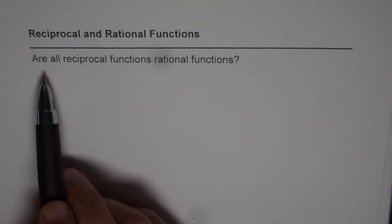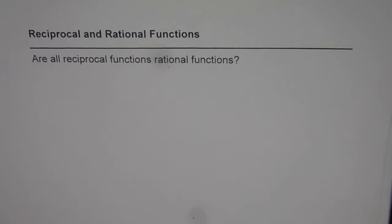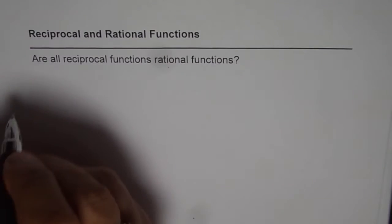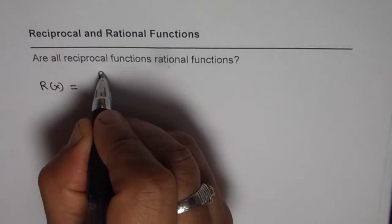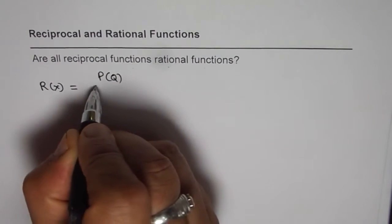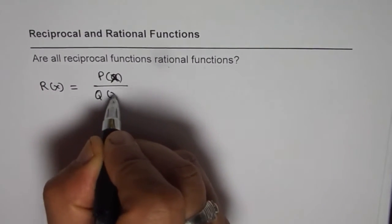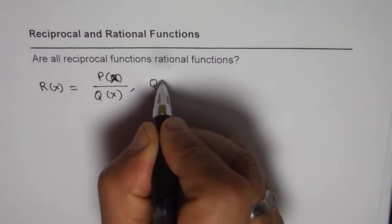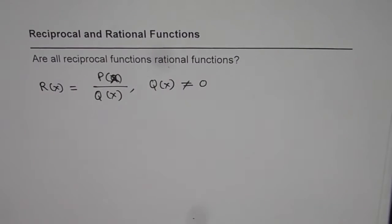So the question here is, are all reciprocal functions rational functions? Well, let's get back to the definition of rational functions. We say R of X is a rational function, which is quotient of polynomials, P of X over Q of X, where denominator Q of X is not equal to zero. This is what a rational function is.